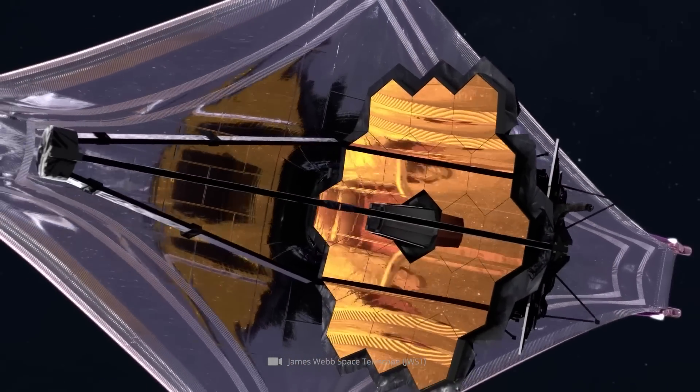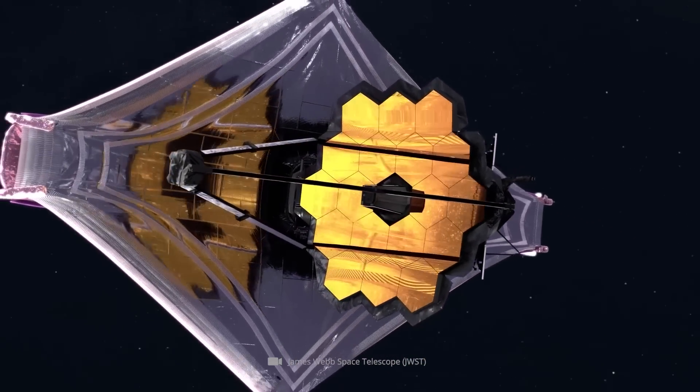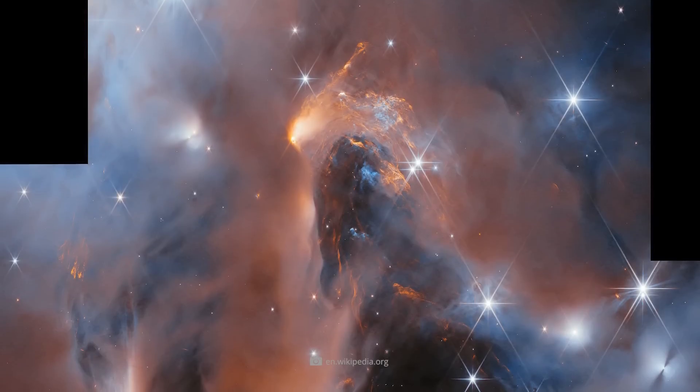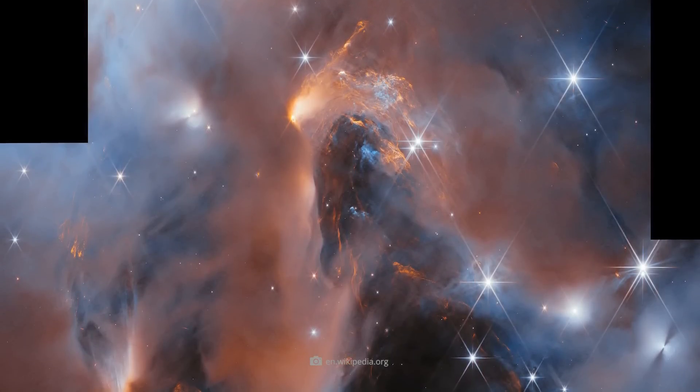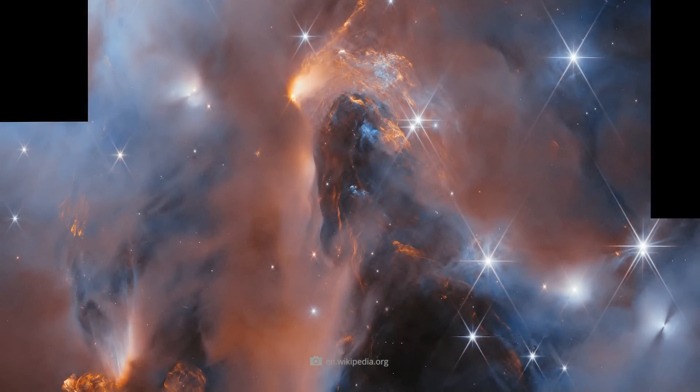Because while Webb's sharp infrared view also penetrates the dusty veils in this case, we also see gas and dust disks in the picture, from which new planetary systems may emerge.